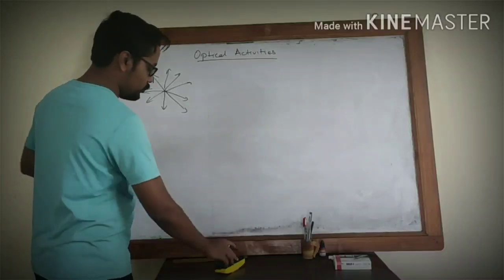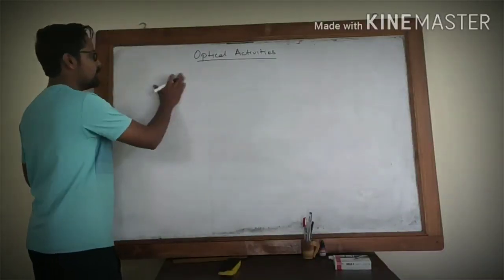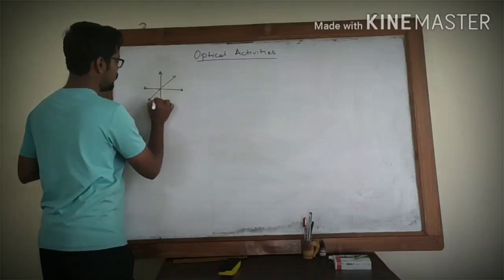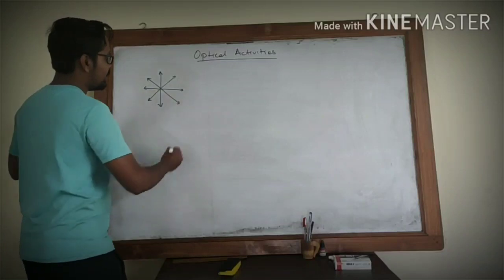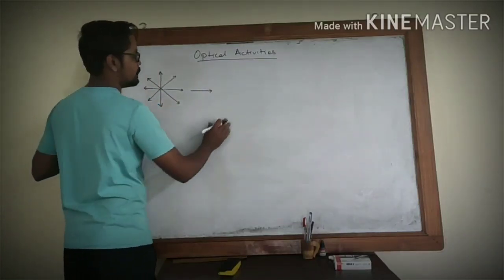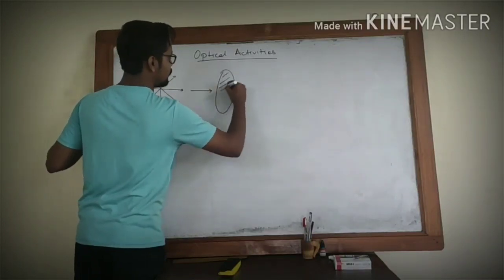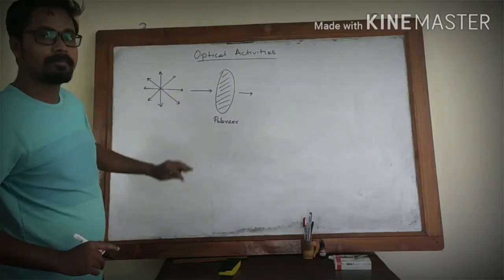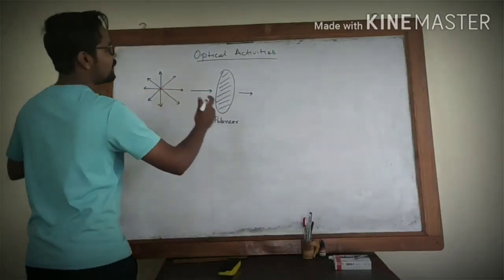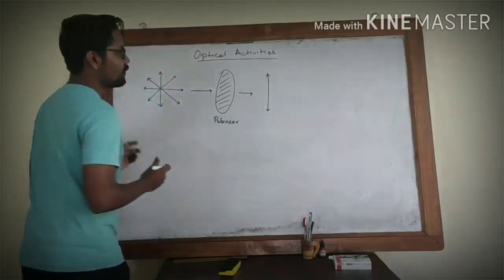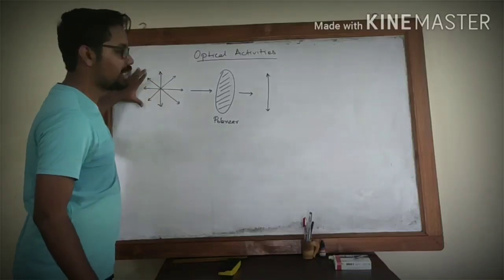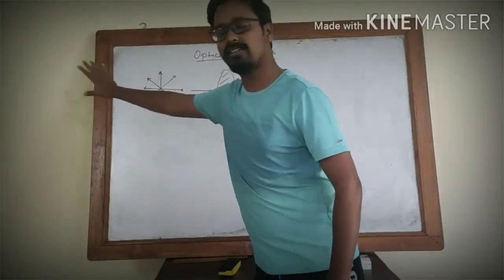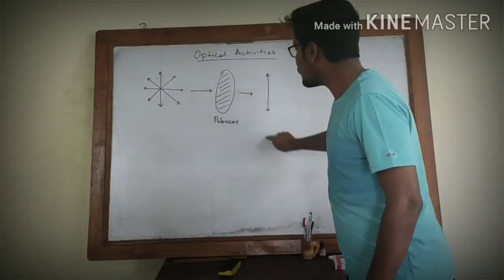Light passes in all directions. Suppose this is the direction of light and it passes through something called a polarizer. If it passes through a polarizer, we find that the light rays are polarized into a single path — all other components are removed and it converts into a single path of light.